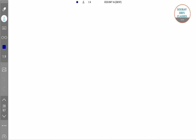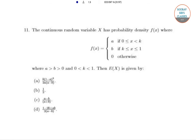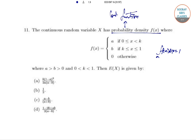Now let's proceed to the next question. Here they are saying that a continuous random variable X has a probability density function (PDF). Remember that for a PDF, the integral of f(x) dx is always equal to 1, and PDF is only applicable for a continuous function.